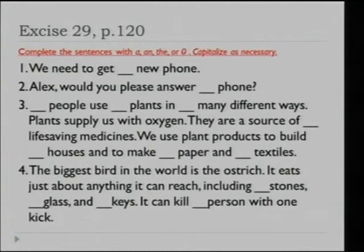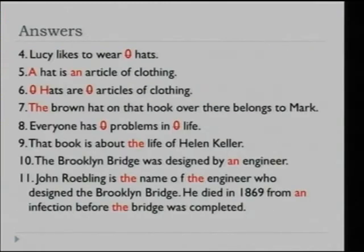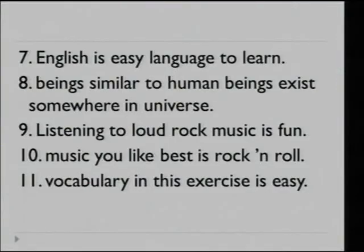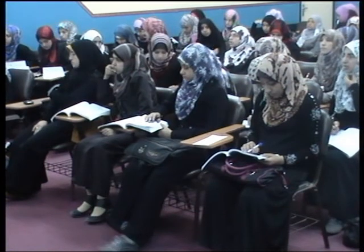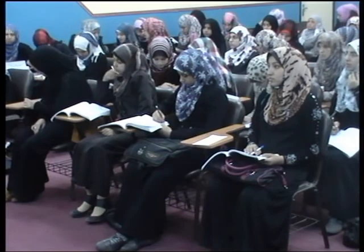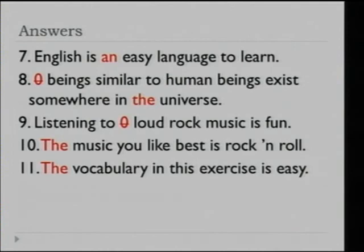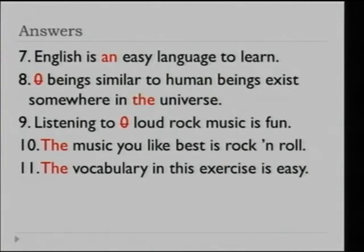Now this is exercise number eight. Which sentence in the previous exercise? Yes — b, zero article. And this one — yes, in the universe. You are right, in the universe.